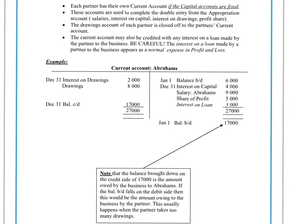As discussed earlier, any profits in a sole trader account belong to that one owner. But in a partnership, you're going to have different amounts according to how much interest they've been paid on their capital, how much interest they've had to pay on drawings, and how much they've been paid as a salary. So every partner will be owed a different amount according to the amount they've invested or the amount they've worked within the partnership. In partnerships, we draw up a special type of account known as a current account, which simply tells you at a point in time how much the business actually owes each of the partners.